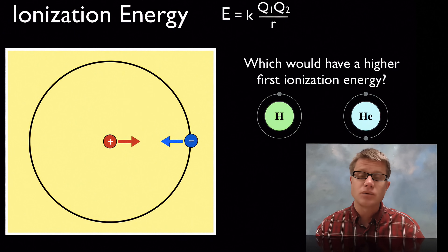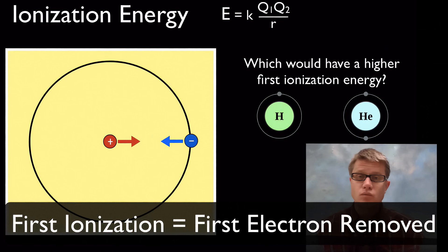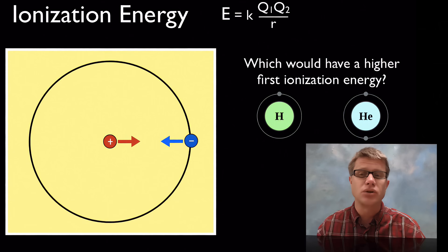And so let me ask you a quick question. Which do you think would have a higher ionization energy? Hydrogen? It's got 1 proton, 1 electron. Or helium? It's going to have 2 of each. And 2 neutrons as well. So make a guess.